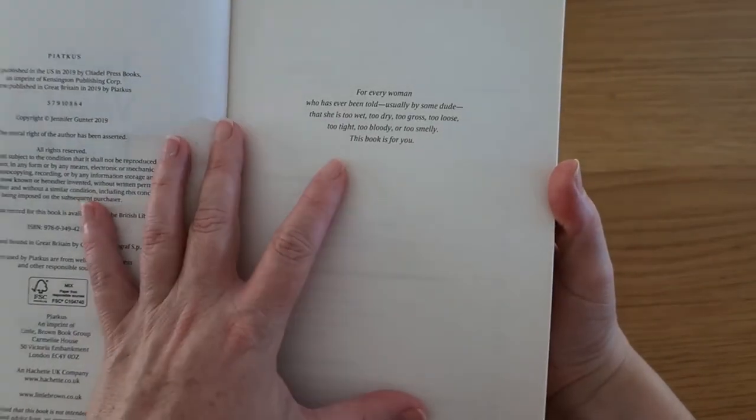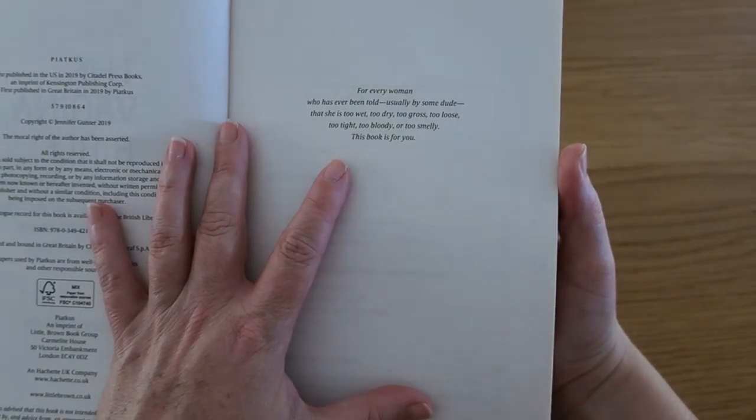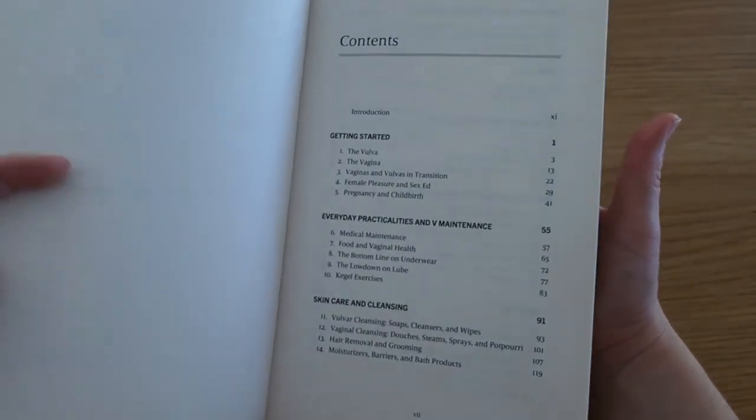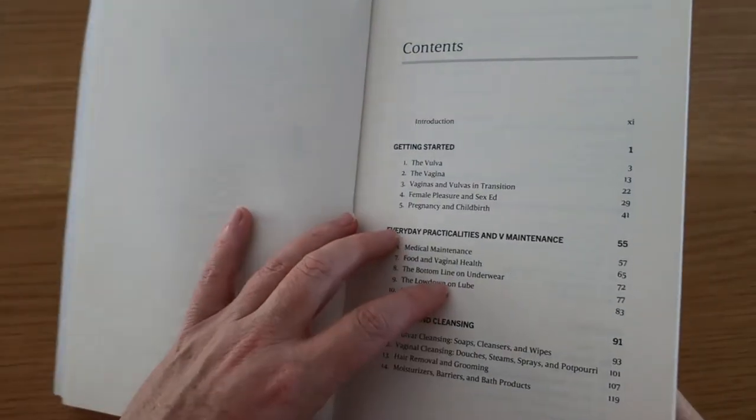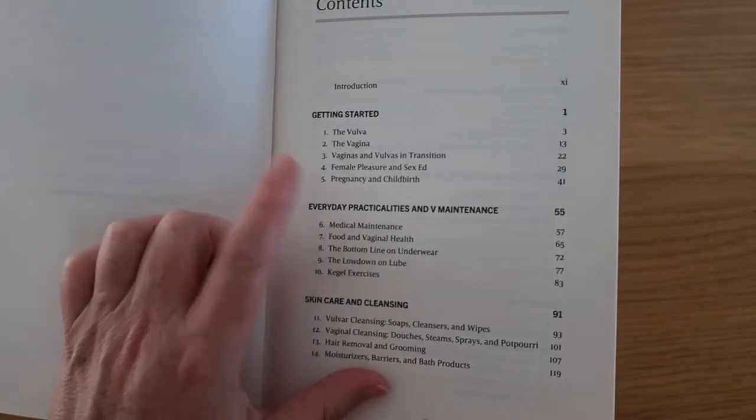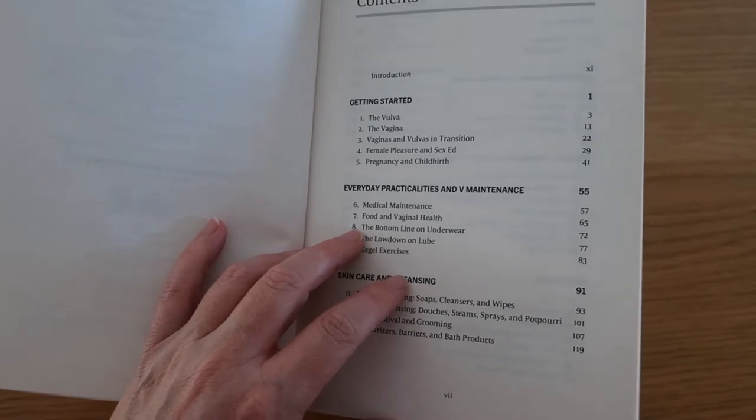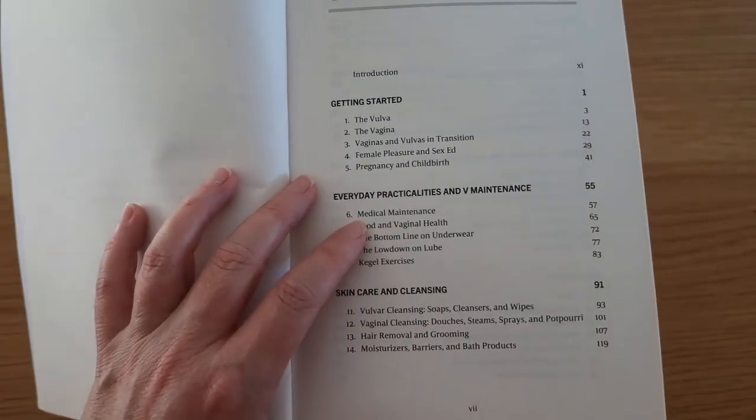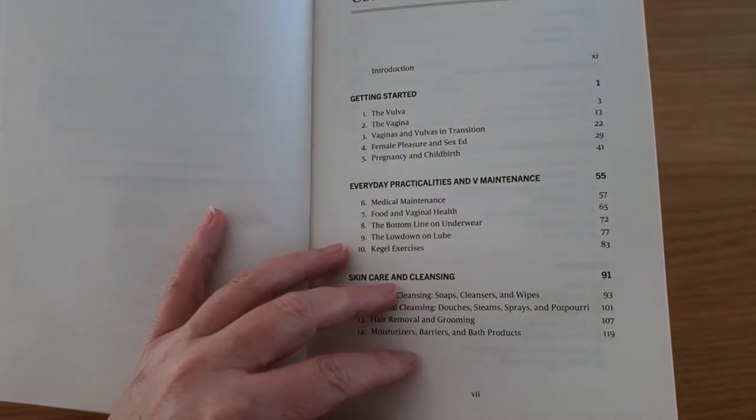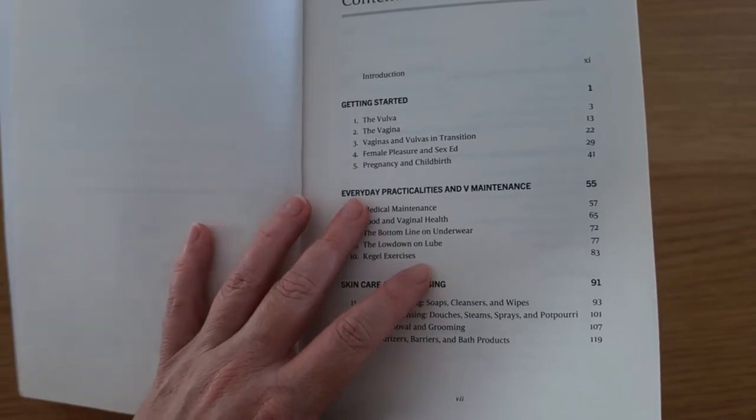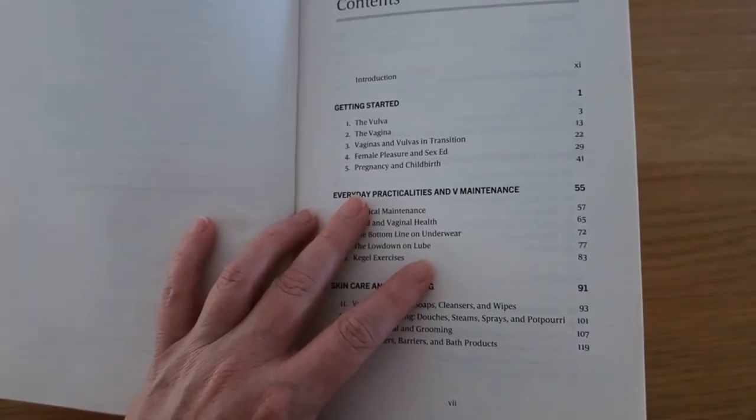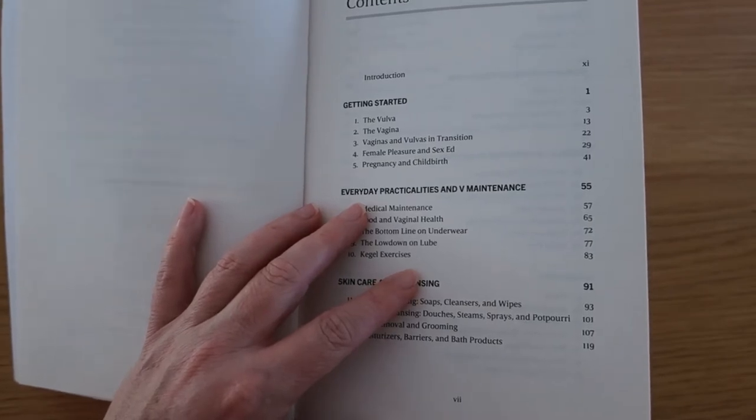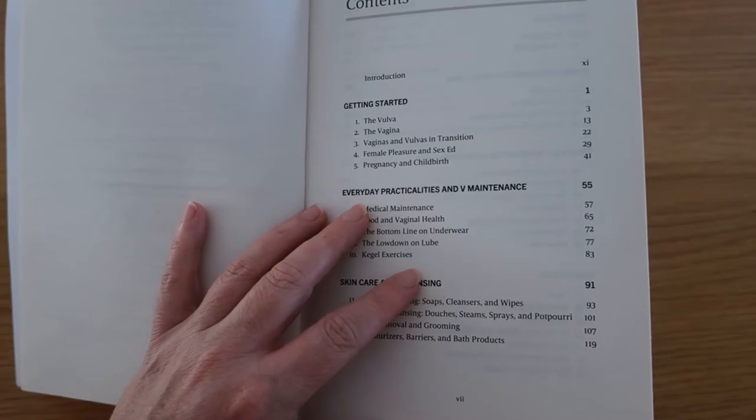This dedication is for every woman who has ever been told, usually by some dude, that she is too wet, too dry, too gross, too loose, too tight, too bloody, or too smelly. This book is for you. The book is relatively well organized into sections. The first section, Getting Started, includes the vulva, the vagina, vaginas and vulvas in transition, female pleasure, sex ed, and child pregnancy and childbirth. So this deals with bio women and transitioning women, a quick biology lesson, sex ed, and overall information including development, sex, pregnancy, and childbirth.